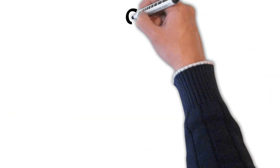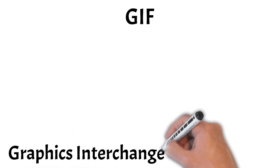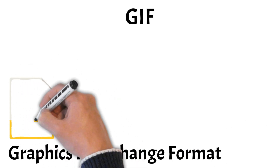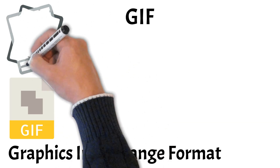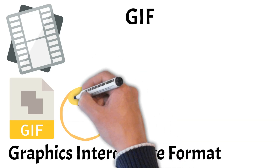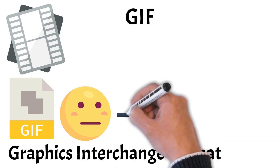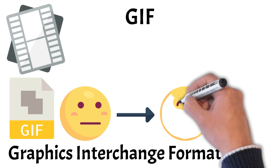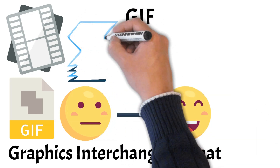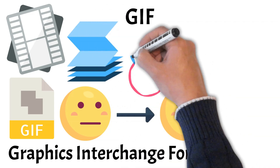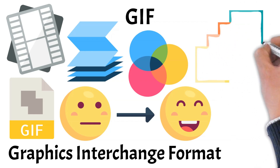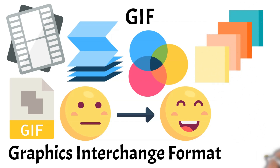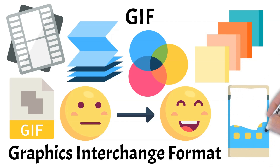Moving on, we have GIF. GIF, or Graphics Interchange Format, is a raster image format best known for its ability to support animation. Unlike JPEG and PNG, GIFs can store multiple frames in a single file, allowing for short, looping animations commonly used in memes, reaction images, and simple web graphics. GIFs use lossless compression, but they are limited to a 256-color palette, which can result in lower image quality for detailed photos or complex gradients. Despite this limitation, GIF remains a popular format for lightweight animations and web graphics due to its wide compatibility and ease of use.